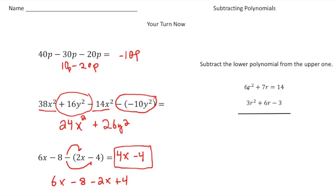The last one: we're subtracting the lower polynomial from the upper one. So again, I'm going to put a subtraction sign here. 6r² minus 3r² is 3r². 7r minus 6r is 1r. And then 14 minus negative 3—again, it's like adding 3—so that's plus 17. And there it is. How'd you do?